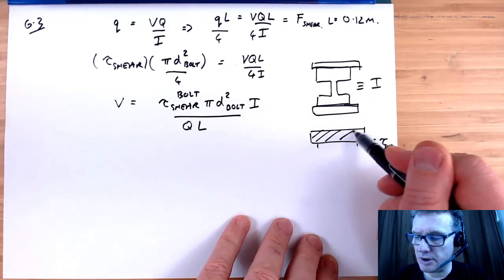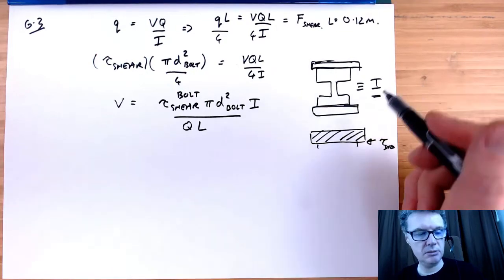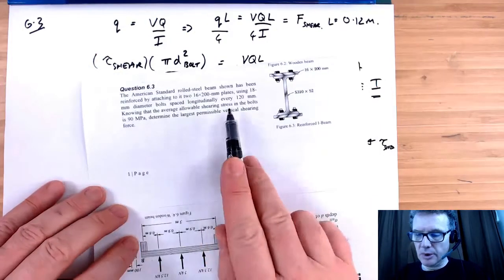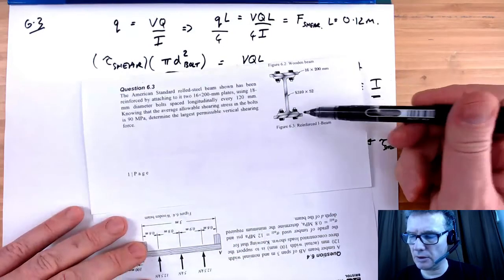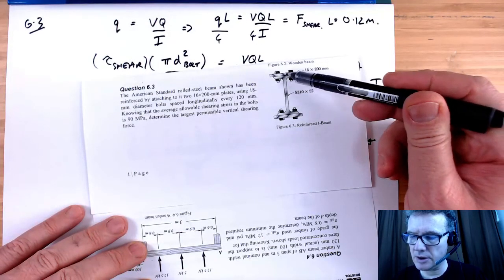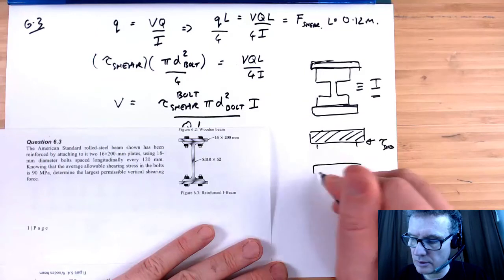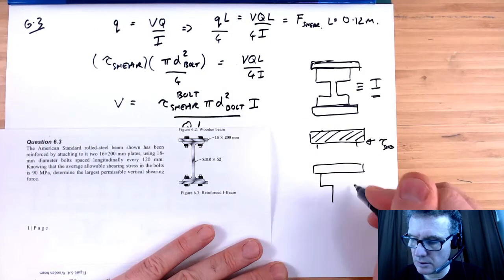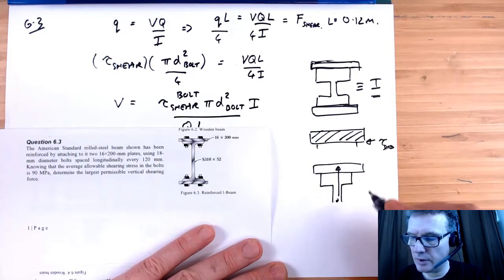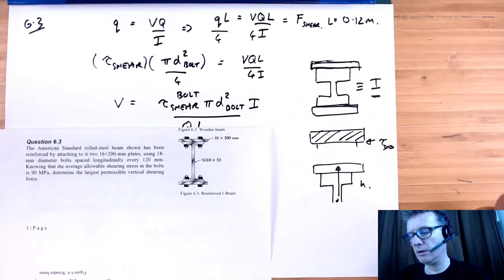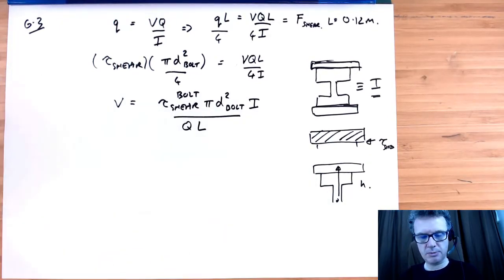The width is irrelevant for the shear flow area, but we're interested in the area of the top plate. We look up I from a table, and we also need the distance to the centroid of the top plate. We start with the section depth.